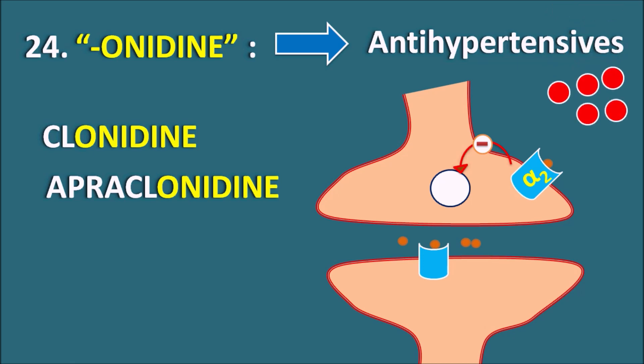Drugs ending with Onidine — such as Clonidine and Apraclonidine — act as agonists at the presynaptic alpha-2 receptors, thereby inhibiting neurotransmitter release. Clonidine can decrease the release of acetylcholine, norepinephrine, and other mediators. That is why Clonidine can be used as an antihypertensive as well as in the treatment of withdrawal syndrome produced by opiates.